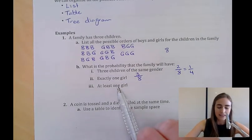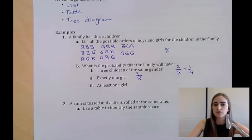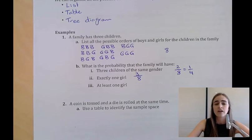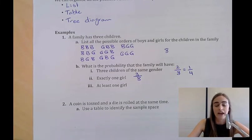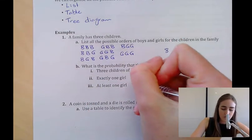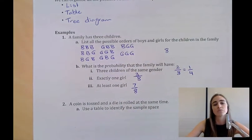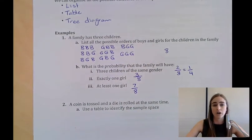At least one girl could mean one girl, two girls, or three girls. The only way that doesn't happen is if all three children are boys. So because there's only one option that doesn't include that, it would be seven out of eight, because all other seven options include at least one girl.